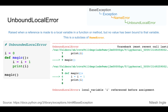And therefore, the error description says the local variable i is referenced before an assignment. That i equals zero is outside of the function. If you put that line of code inside of the function, then it will work just fine.